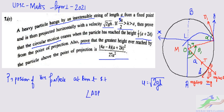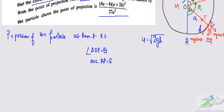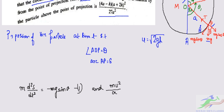So AOP is equal to θ, and we can write s = Aθ — this is equation 3. The equations of motion of the particle are: md²s/dt² = −mg sinθ (equation 1), and mv²/A = T − mg cosθ (equation 2).